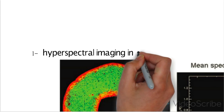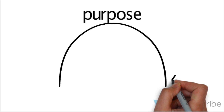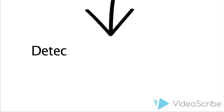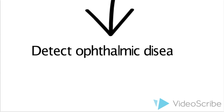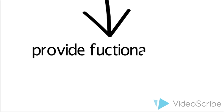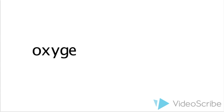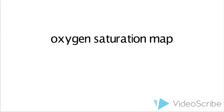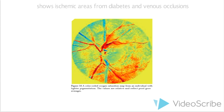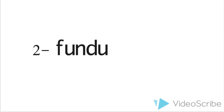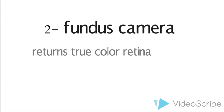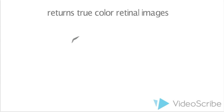Retinal imaging spectroscopy and fundus imaging have always held a major role in detection and management of ophthalmic diseases. It also provides functional maps — for illustration, oxygen saturation maps show ischemic areas from diabetes and venous occlusions. However, obtaining retinal spatial spectral data has been difficult due to saccades and long data acquisition times. Current retinal spectral imaging approaches are incapable of true snapshot operation over a wide spectral range with a large number of spectral bands. A snapshot imaging spectrometer acquires a complete spatial spectral image cube in approximately 3ms, from 450 to 700 nm with 50 bands, eliminating motion artifacts and pixel misregistration. In comparison with the fundus camera, the instrument returns true color retinal images for comparison to standard fundus images while the patient is still dilated.